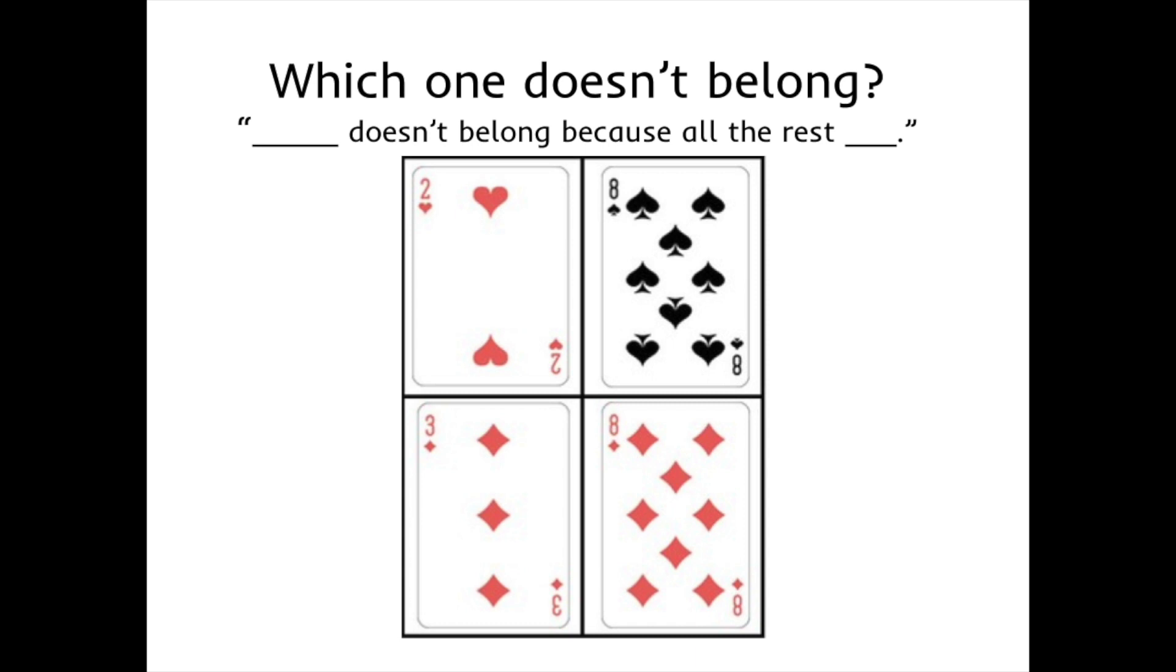Here's what I noticed. The red three of diamonds doesn't belong because all the rest are even numbers. Three is an odd number. Do you see a different one that doesn't belong? Turn and tell someone now.